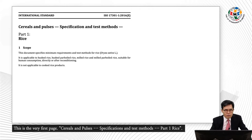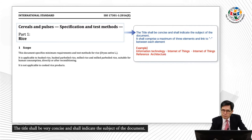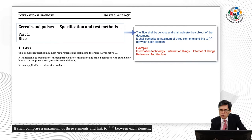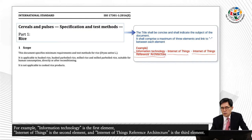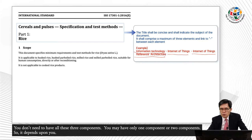This is the very first page — the title: Cereals and Pulses, Specification and Test Methods, Part 1, Rice. The title shall be very concise and shall indicate the subject of the document. It shall comprise a maximum of three elements, linked by a dash between each element. For example, 'information technology' is the first element, 'Internet of Things' is the second, and 'Internet of Things reference architecture' is the third. You don't need all three components — you may have only one or two.